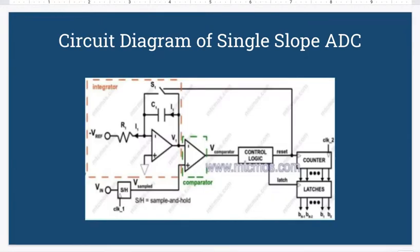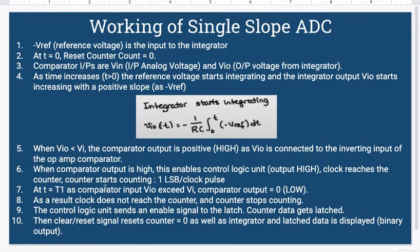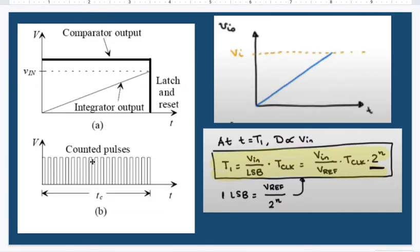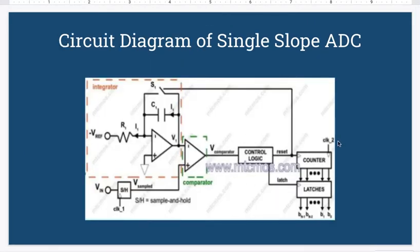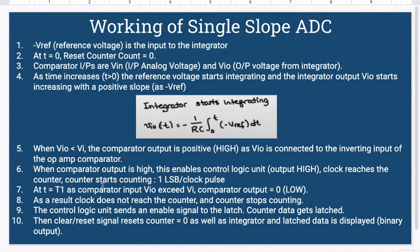So the comparator output is high and the VIO is connected to the inverted output of the op-amp. When the comparator output is high this enables control logic unit that's output high. The clock reaches the counter and the counter starts counting at one least significant bit per clock pulse. Then as the integrator output increases at a positive slope it finally reaches VIN. At t equal to t1, as comparator input VIO exceeds VI, comparator output becomes zero. As a result the clock does not reach the counter, the counter stops counting. The control logic stops the clock from entering the counter.